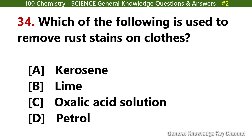Which of the following is used to remove rust stains on cloth? Answer C: Oxalic acid solution.